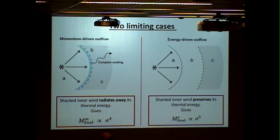The gas that passes this reverse shock is extremely hot, 10 to the 10 Kelvin. What happens depends on the fate of this energy. If this energy is preserved entirely, this region, which I called region B, the wind that has been shocked expands adiabatically, and you get an energy-driven outflow. The resulting scaling is proportional to sigma to the power of five, perhaps a bit too steep compared to the observations.